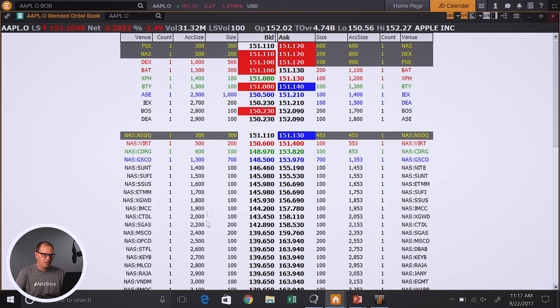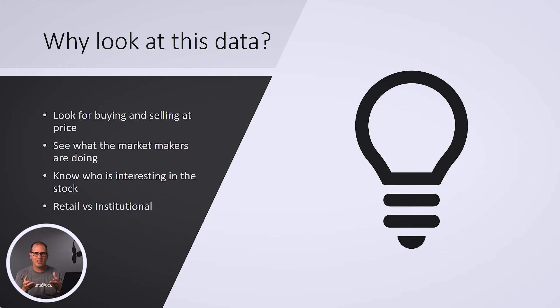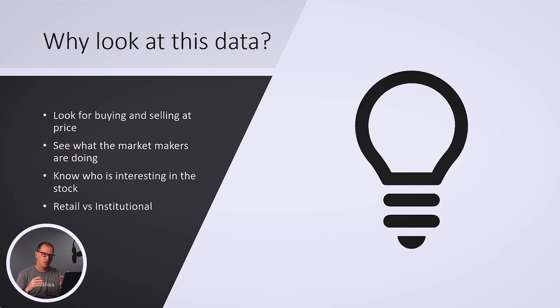Why look at this data? Well, let's go back to the PowerPoint. There are some very important things happening when you're looking at level 2 data. One, we're looking for buying and selling at a certain price — it's a way to look at pressure and see where that buy and sell pressure is. We can also see what the market makers are doing. If there's a lot of bidding at a certain price, you know that's a price these market makers feel is very important to buy at. So now you know who's interested in a stock, and you can see retail versus institutional — smaller firms versus the larger institutional ones like UBS and JP Morgan.